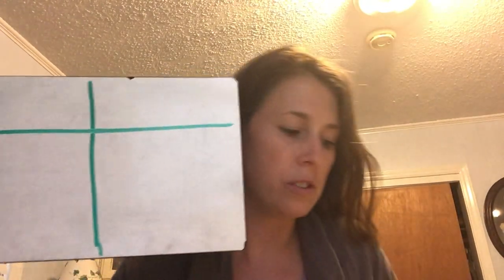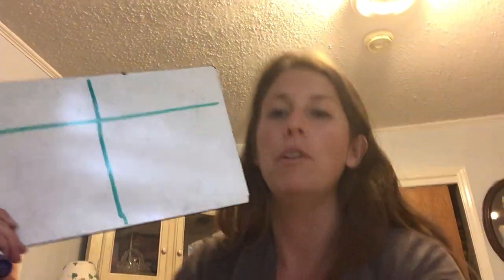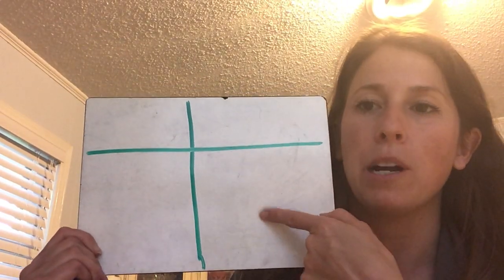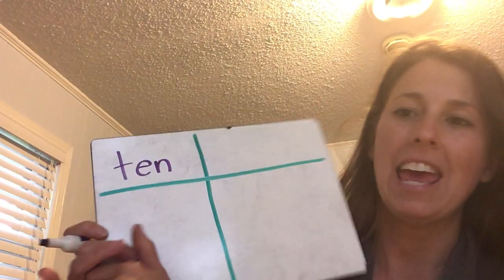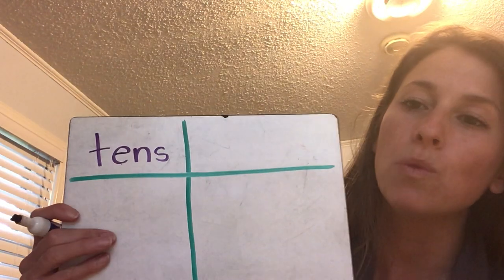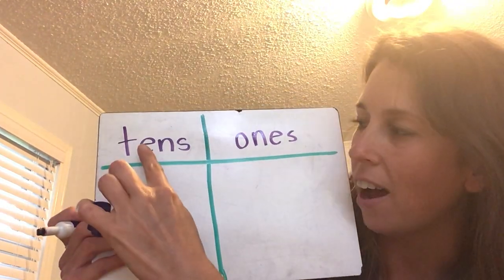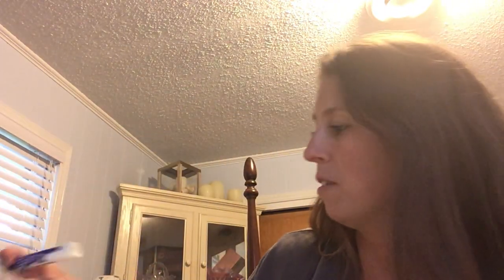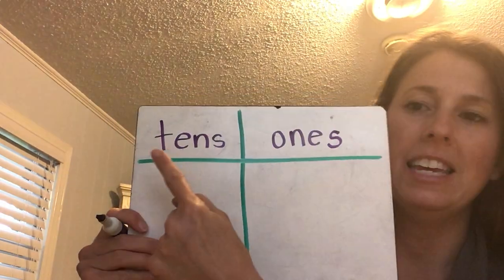You're going to make a T-chart. When we make a T-chart it helps us figure out numbers using tens and ones. Take your piece of paper and make a big T. On this side write 'tens' — tens with an S because there might be more than one. And on the other side write 'ones.' So tens are on this side, ones are on this side.